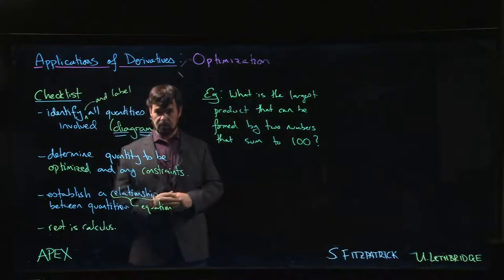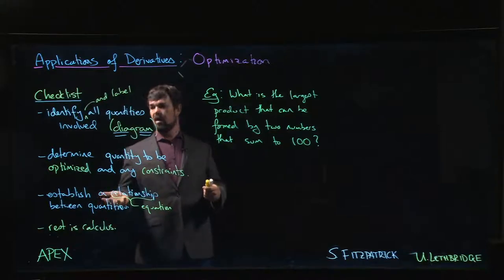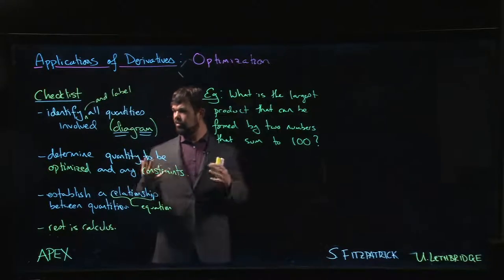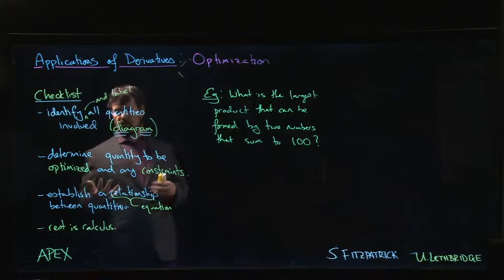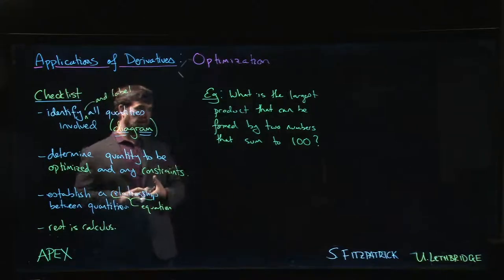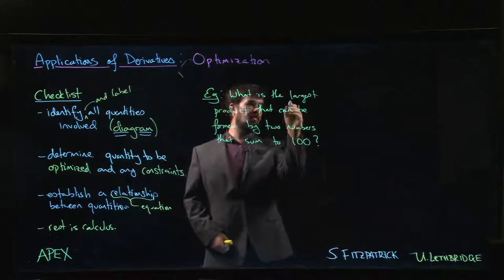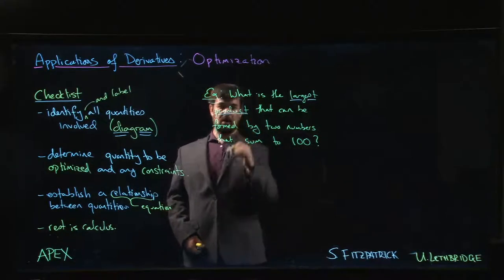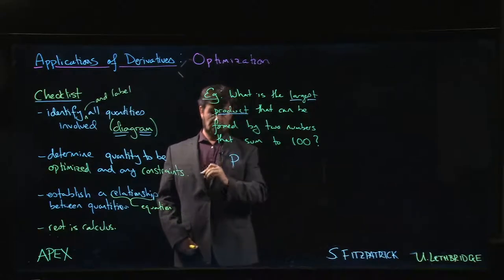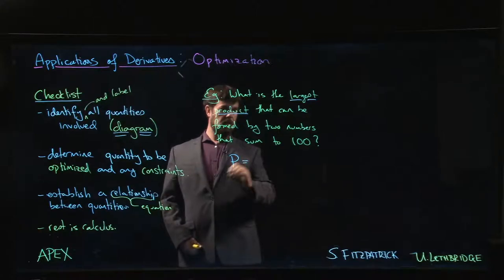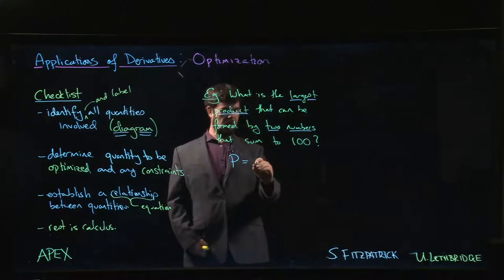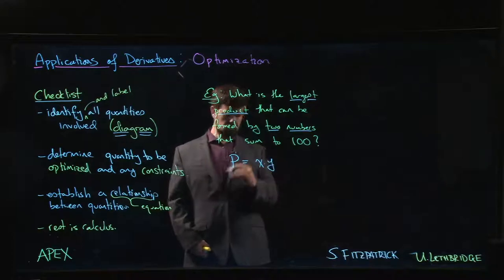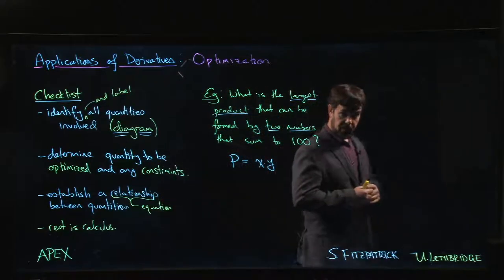Any optimization problem's goal is to turn it into an extreme value problem and then use those methods. You have different quantities and relationships among them, so first, by reading carefully, figure out what we're actually trying to optimize. In this problem we look for words like 'largest product.' So there's a product — call it P — we want to make it as large as possible. It's the product of two numbers; let's call them x and y. So P = x times y, and we want to maximize it.